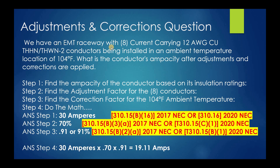So let's look at the question. We have an EMT raceway with eight current-carrying conductors. They're 12 gauge copper, THHN/THWN-2. That's important because since it has a dash two, it doesn't matter whether it's wet or dry — we pull our starting ampacity from the highest rated temperature of that insulation, which is 90 degrees C. The conductors are being installed in an ambient temperature of 104 degrees Fahrenheit. What is the conductor's ampacity after adjustment and corrections are applied?